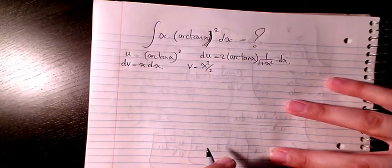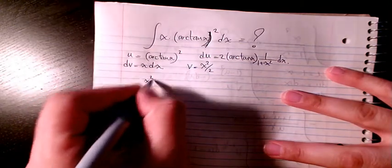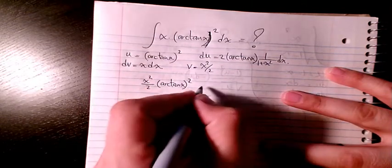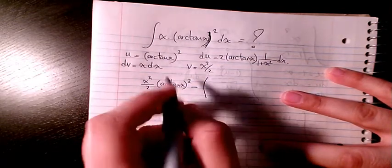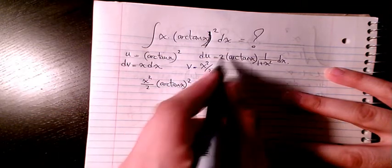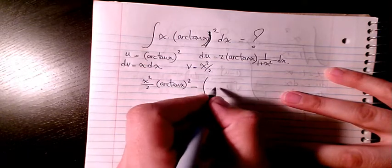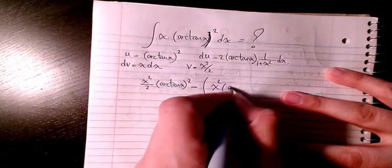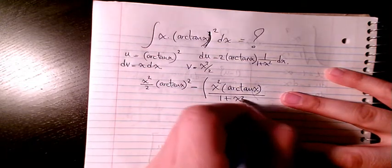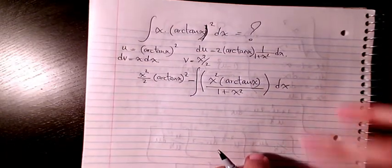So it will be u times v, which is x²/2 · arctan(x)², minus the integral of v du. The twos cancel out, so it will be the integral of x²·arctan(x) / (1 + x²) dx.